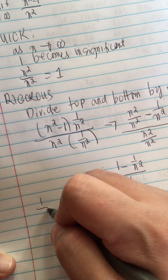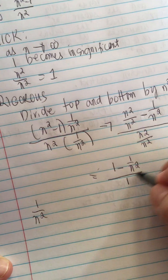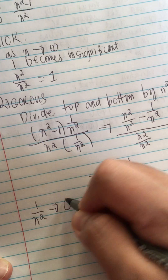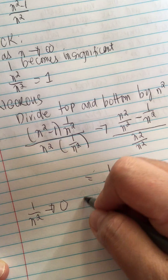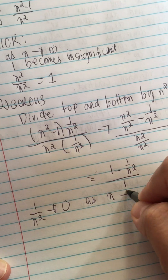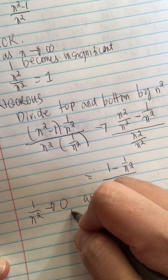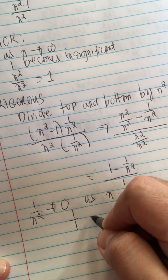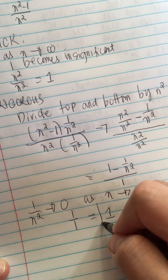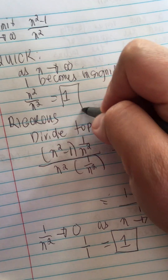Now 1/n² will become 0 as n goes to infinity. So we have 1 over 1, which equals 1 — the same answer.